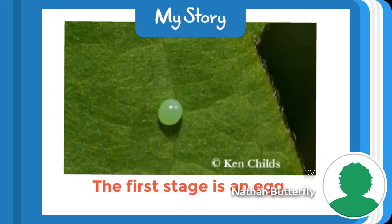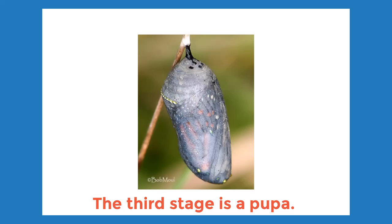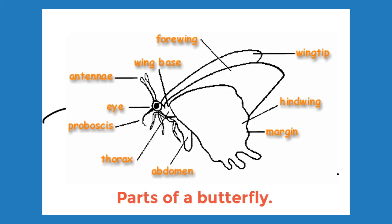The first stage is an egg. The second stage is a caterpillar. The third stage is a pupa. The fourth stage is a butterfly. Parts of a butterfly.